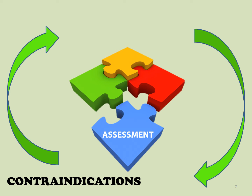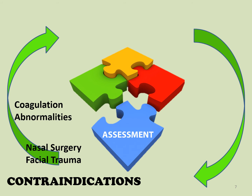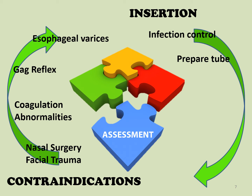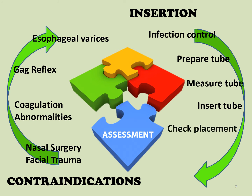Prior to insertion of the nasogastric tube, the patient must be assessed for contraindications to the procedure. Contraindications for nasogastric insertion include recent nasal surgery, deviated septum, severe facial trauma or reconstruction, coagulation or bleeding abnormalities, altered or absent gag reflex, or the presence of esophageal varices.